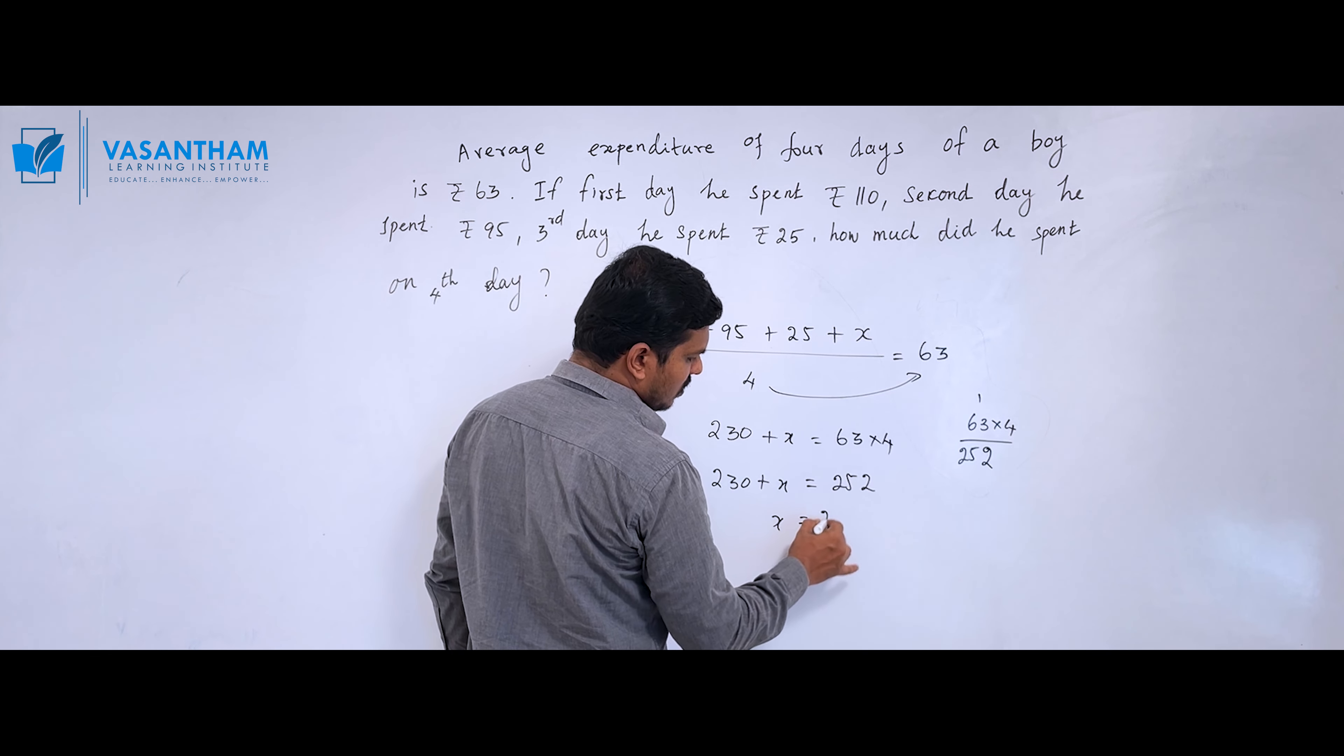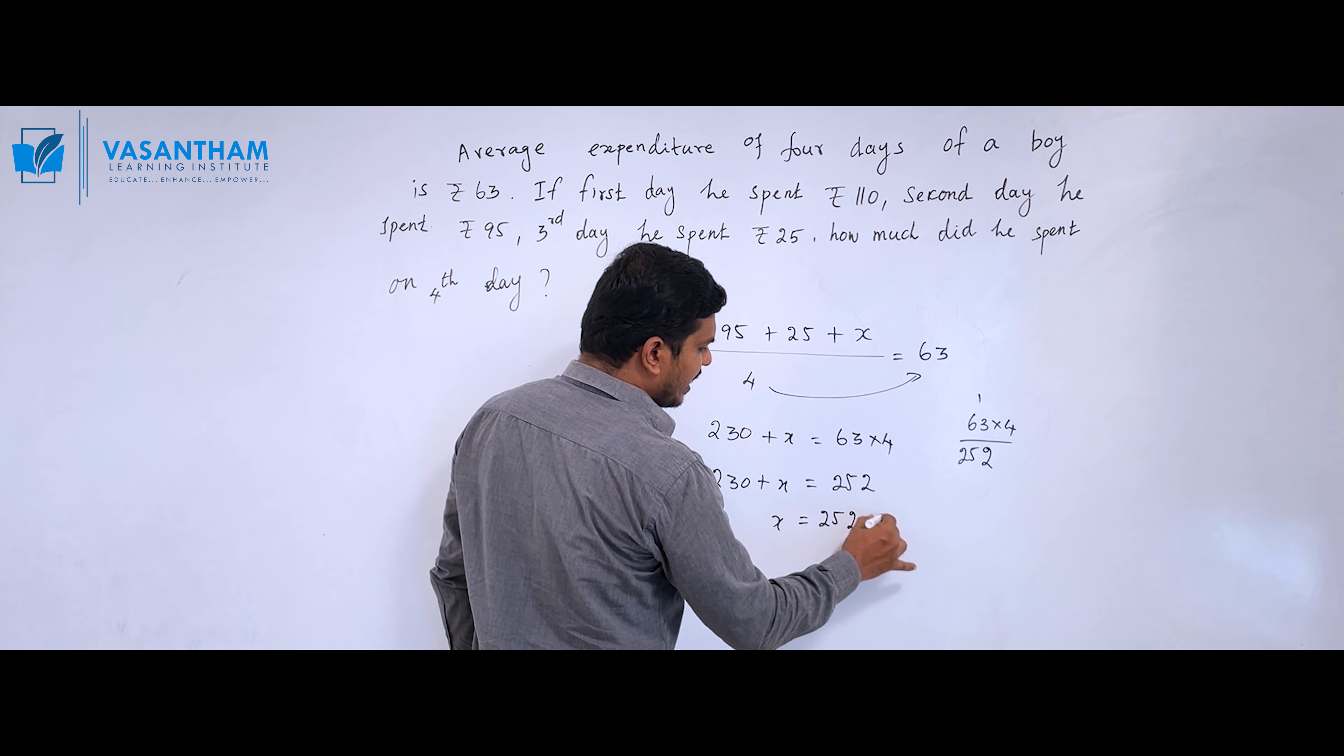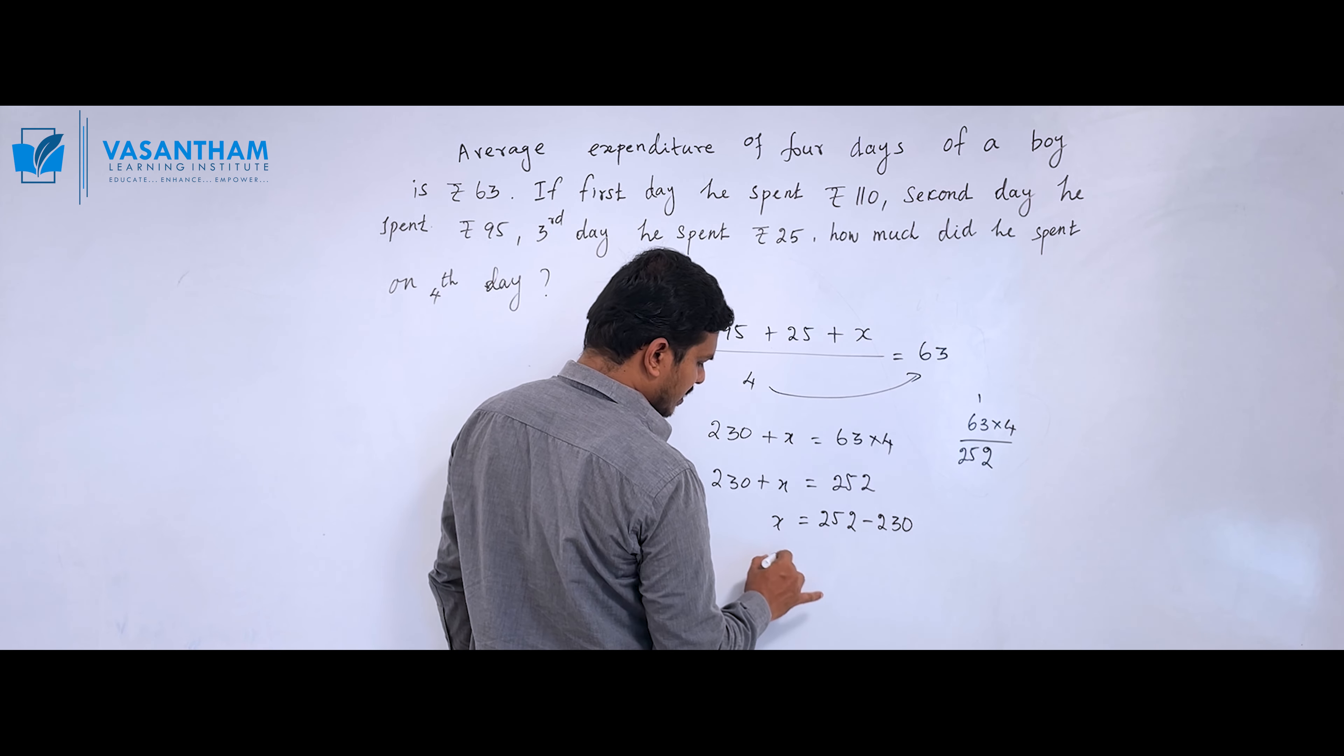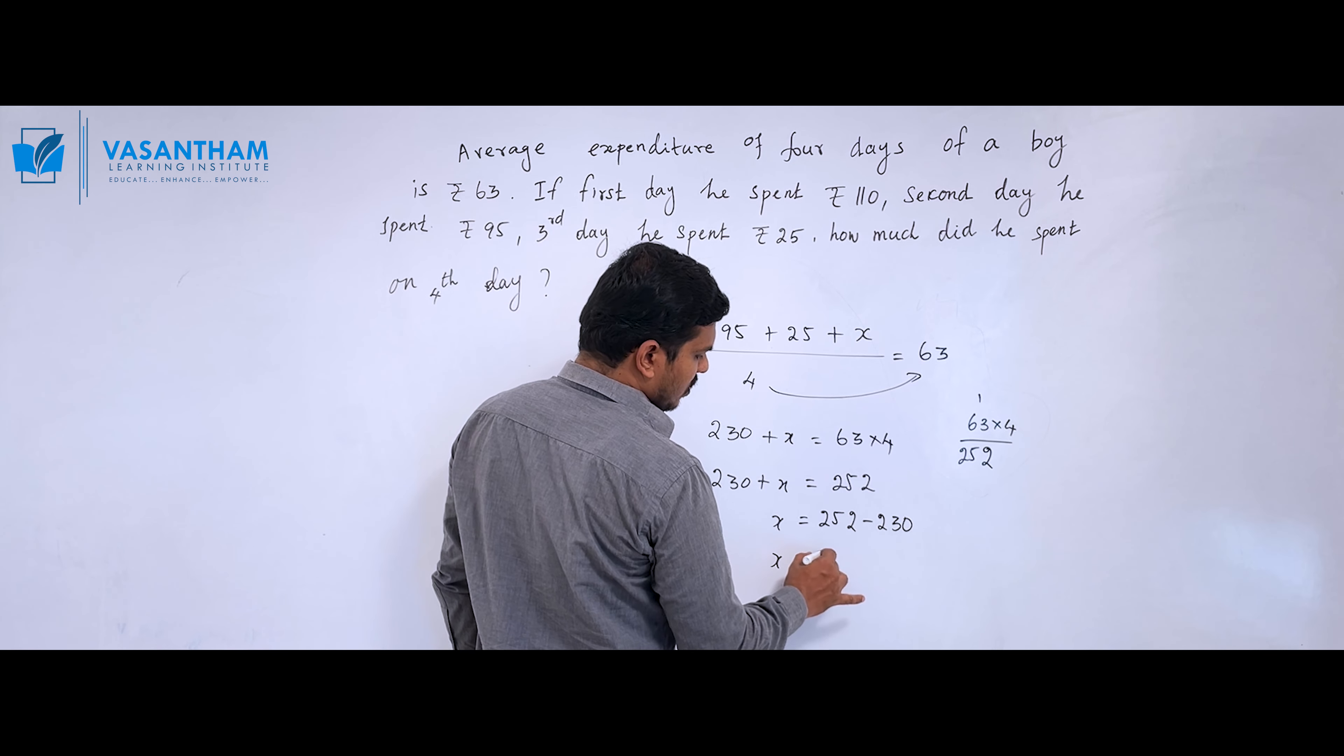Now, x = 252 - 230. Therefore, x = 22 rupees.